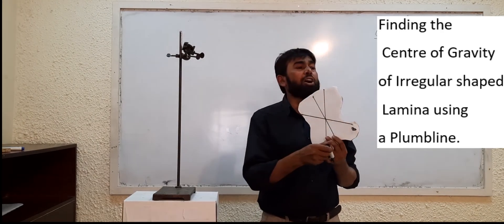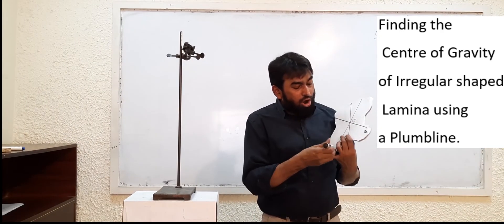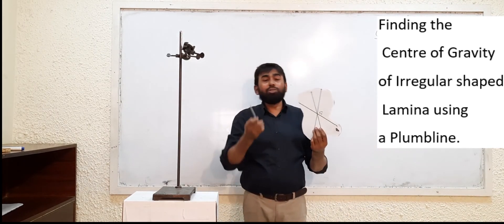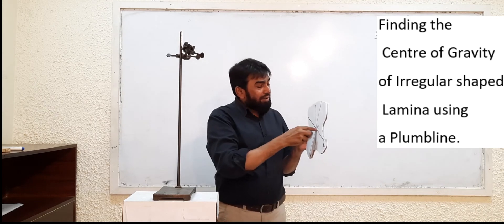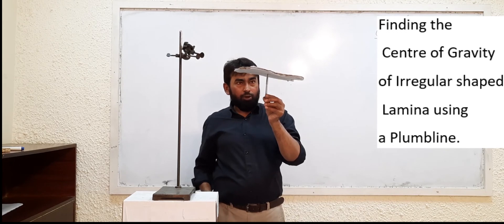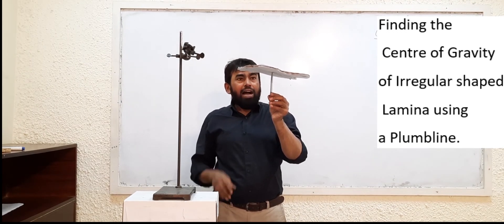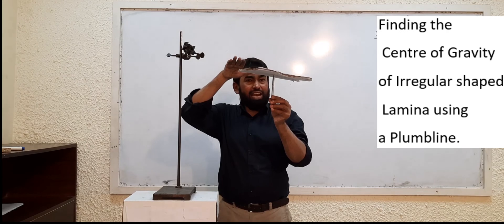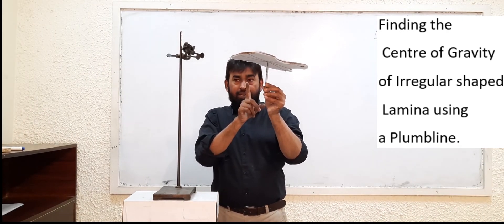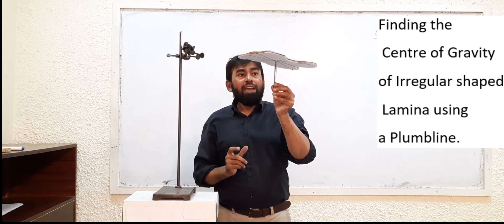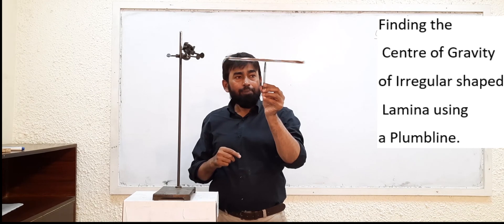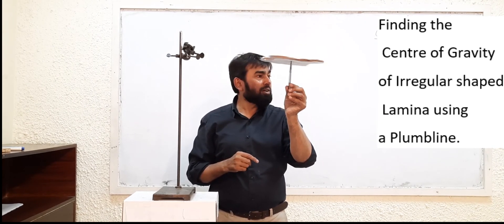This point is basically the center of gravity of this irregular shaped object. Now let us test it — at this center of gravity, try to pivot the lamina. If it is tilting slightly, that is the error. As you can see, we have almost accurately found the center of gravity.